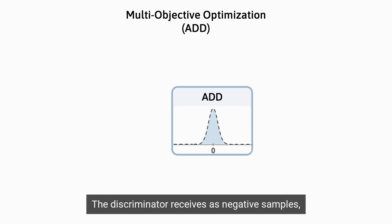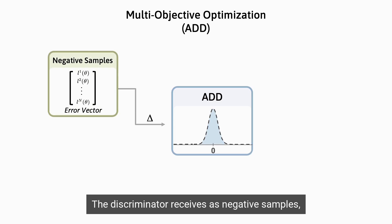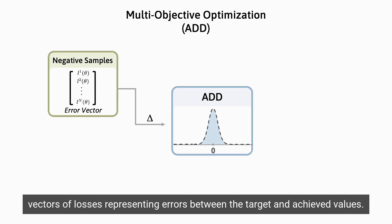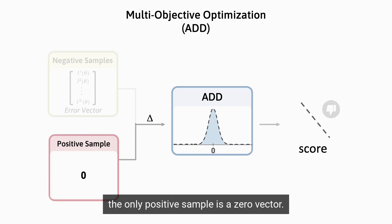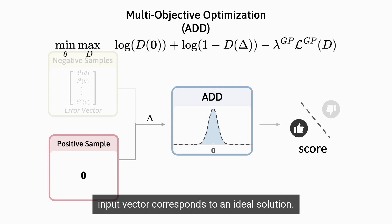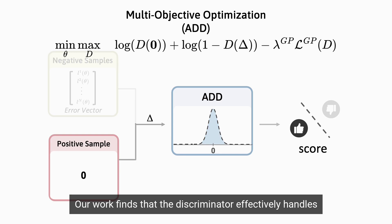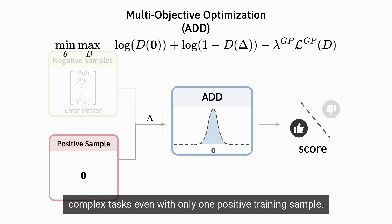The discriminator receives, as negative samples, vectors of losses representing errors between the target and achieved values. With this differential formulation, the only positive sample is a zero vector. The discriminator classifies whether the input vector corresponds to an ideal solution. Our work finds that the discriminator effectively handles complex tasks, even with only one positive training sample.